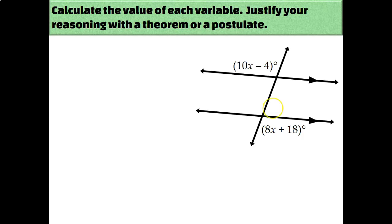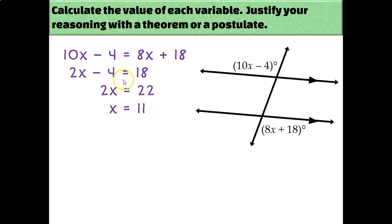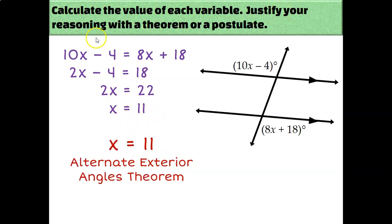Let's throw some algebra in. We're going to set up equations to solve for x. My two labeled angles are on opposite sides of the transversal and on the exterior of the two parallel lines, making them alternate exterior angles. Since alternate exterior angles are congruent, I'll set the two variable expressions equal to each other and solve: subtract 8x from both sides to get 2x, add 4 to get 22, divide by 2 to get x equals 11. The answer is x equals 11 by the alternate exterior angles theorem.